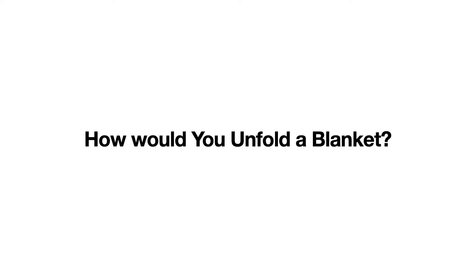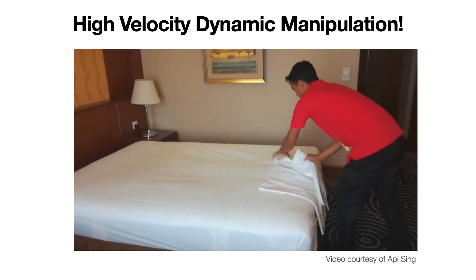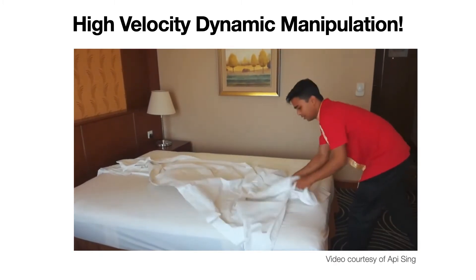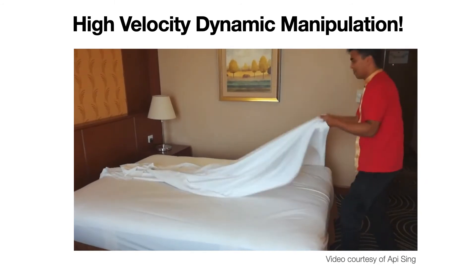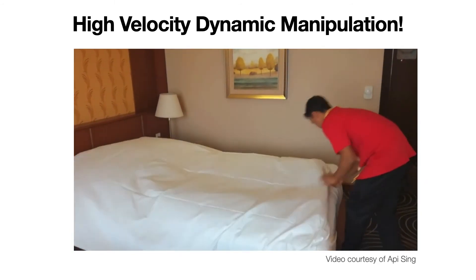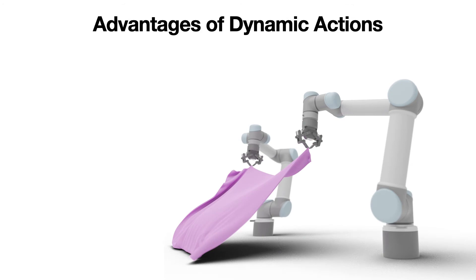Let's take a step back here and consider how you would make your bed in the morning. Would you pick each corner of the blanket up, then walk over to the corresponding corner of your bed to place it down? Probably not. Instead, you would use both of your hands, and with as little as a single high-velocity fling or two, you would be able to completely unfold your initially crumpled blanket. Dynamic actions play a crucial role in our everyday manipulation of deformable objects.